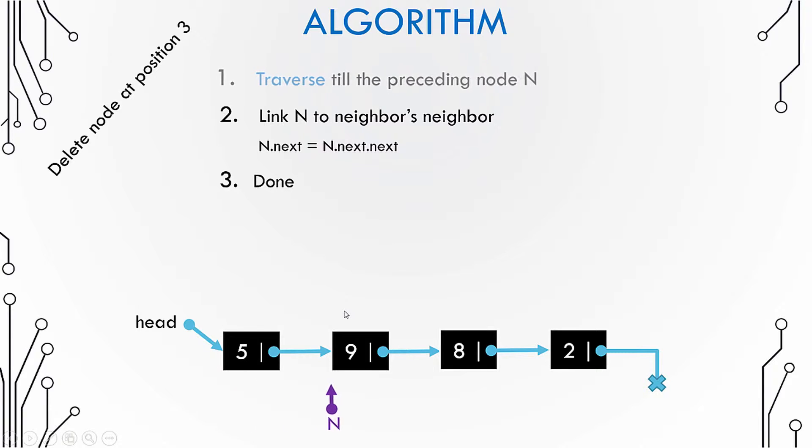So the first step is to traverse till the preceding node. Why do we need to travel to the preceding node? Well, that is where we need to do the modifications, right? We need to point the preceding node to the neighbor of the node that has been deleted. Essentially, we need to skip pointing to node with value 8.